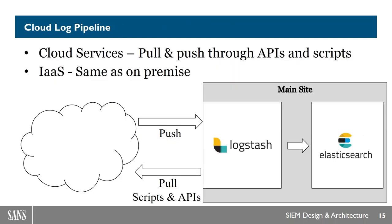Another common architecture is the cloud log pipeline. There are kind of two types: cloud services like Gmail and software-as-a-service versus infrastructure-as-a-service, VPSs, and things like that. If you have cloud services where you don't control the operating system, the good news is Logstash can natively speak to a lot of those services. In other cases, there are generic HTTP REST request inputs that speak to any API and pull logs out. If you have cloud servers you fully control, like any VPS or AWS system, you can just collect logs the same way you would for any on-premise equipment.